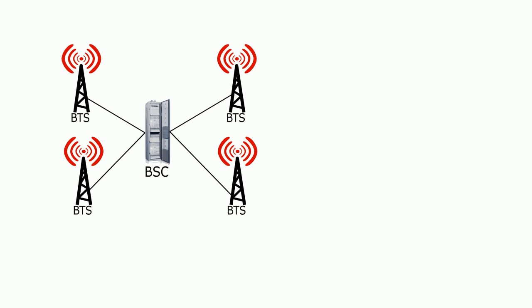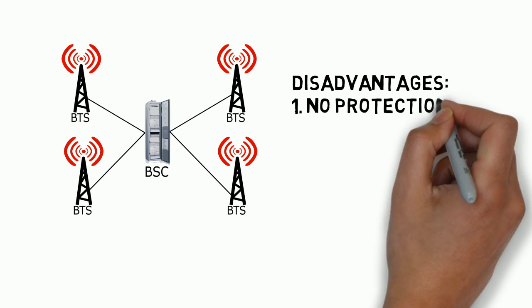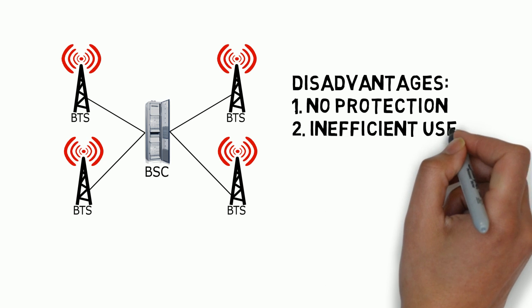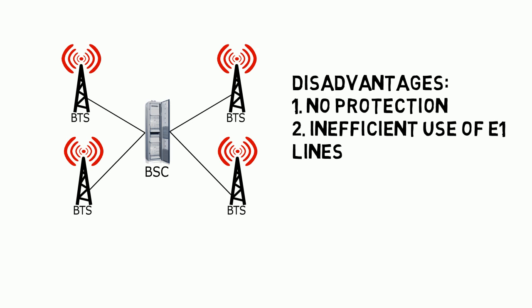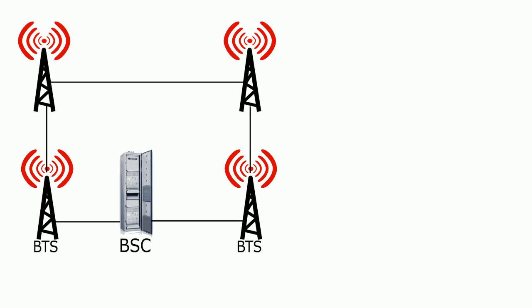Now when we come to the star configuration, as evident from the diagram, one BSC is connected with one BTS directly. One obvious disadvantage is that if there is a breakdown of the link between the BSC and the BTS, the BTS can no longer connect to the network, and consequently the subscribers of that BTS cannot connect to the network either. Also in this case there is an inefficient use of E1 lines, meaning the line cost increases as the channels in those E1s are not used efficiently.